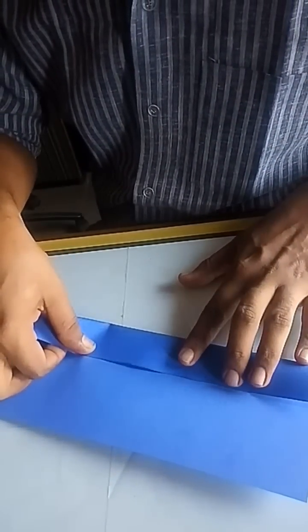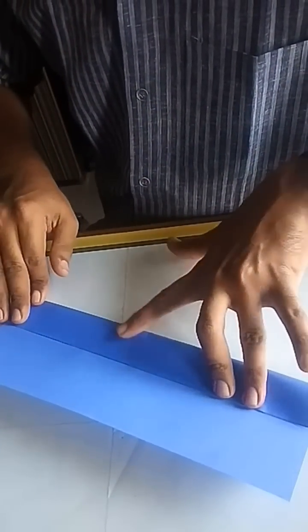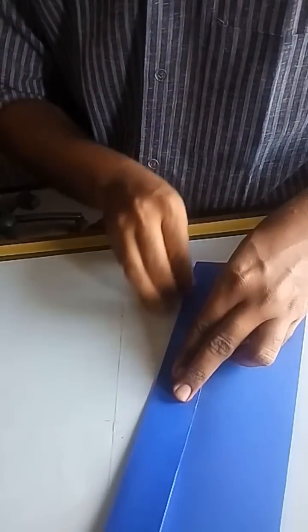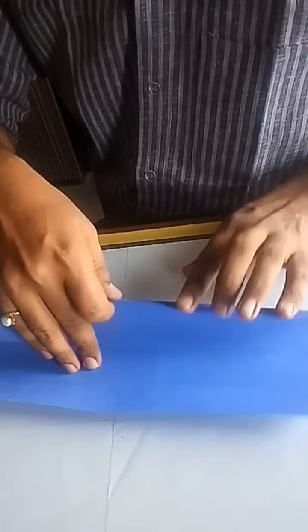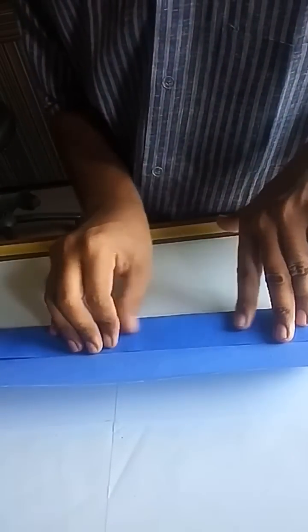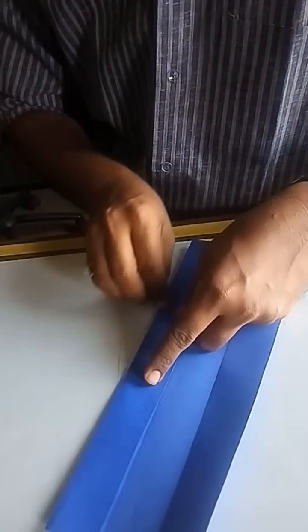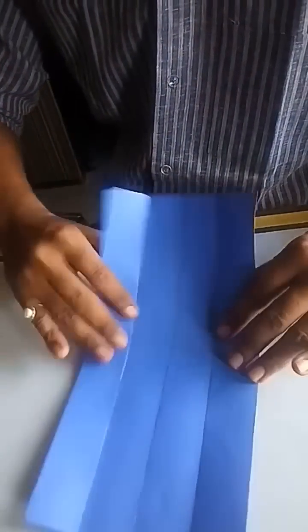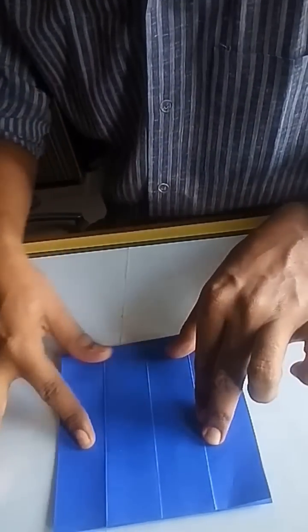Fold the two halves further into halves as I am doing here. Now the paper is divided into four equal rectangular strips.